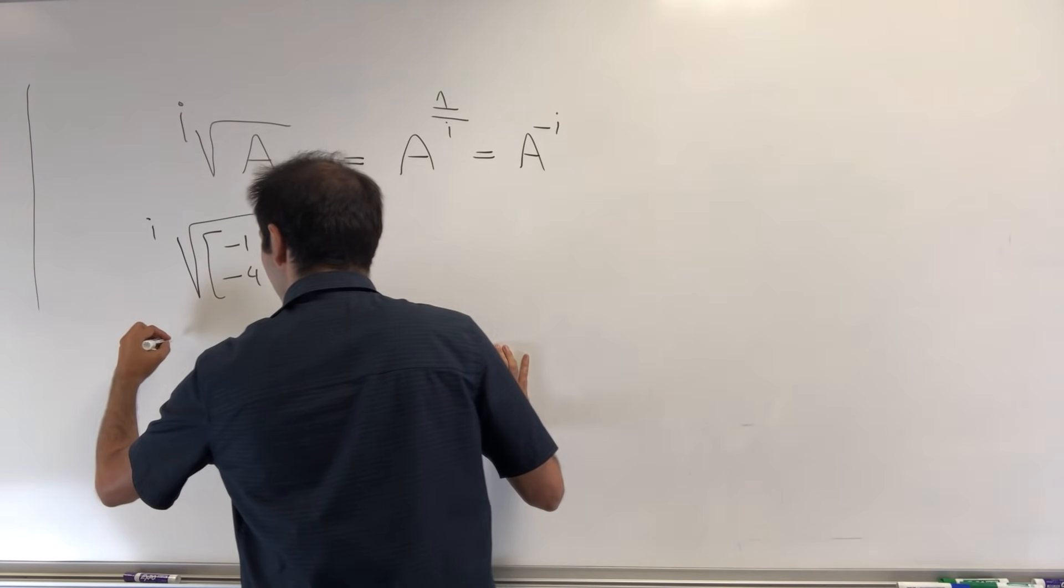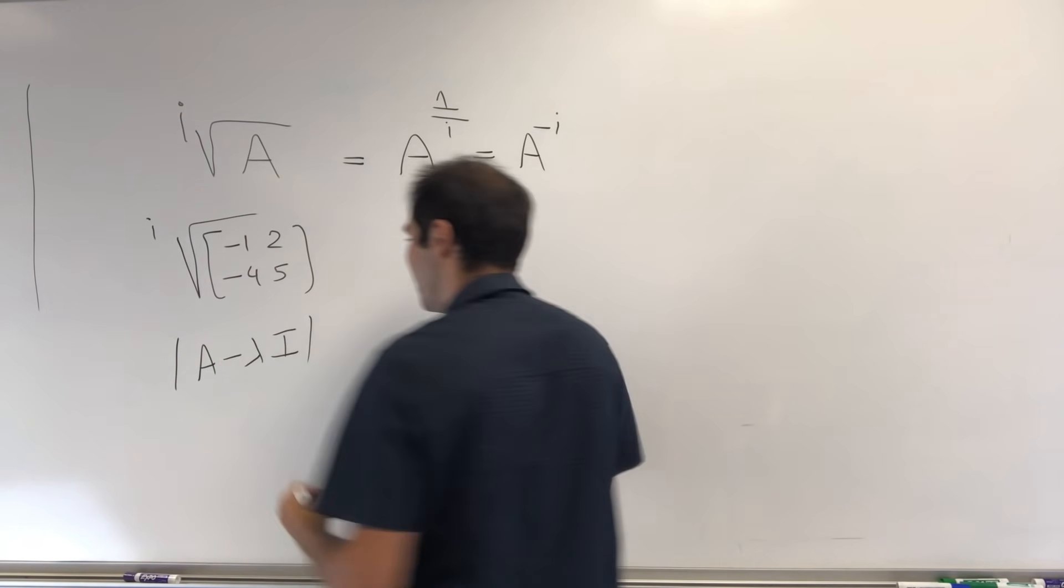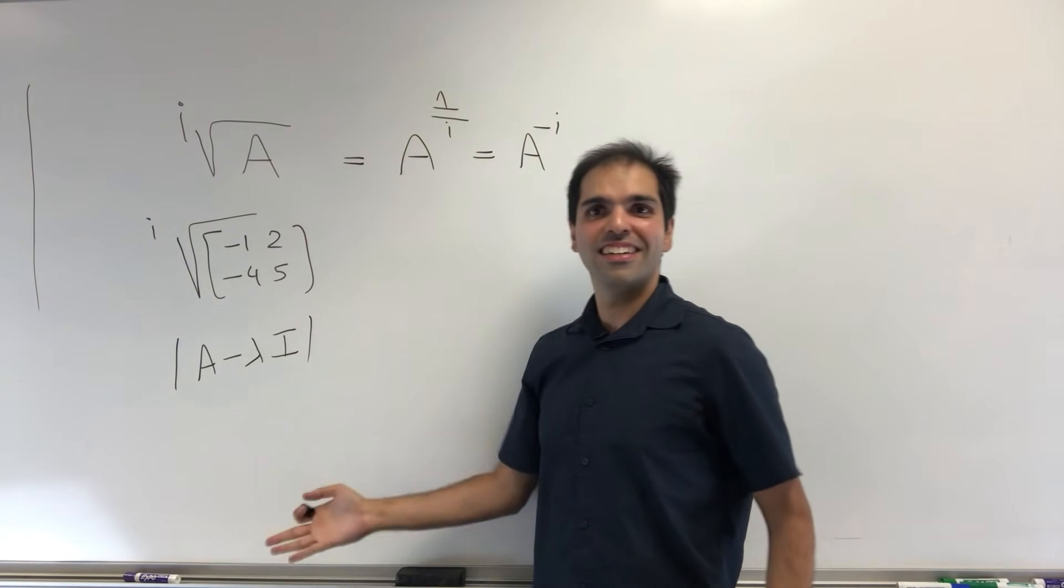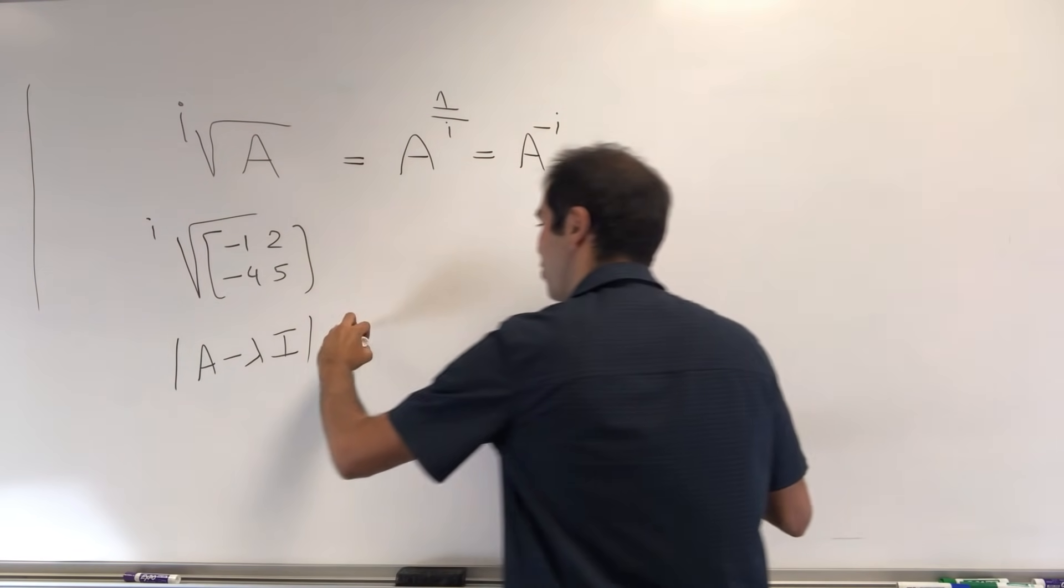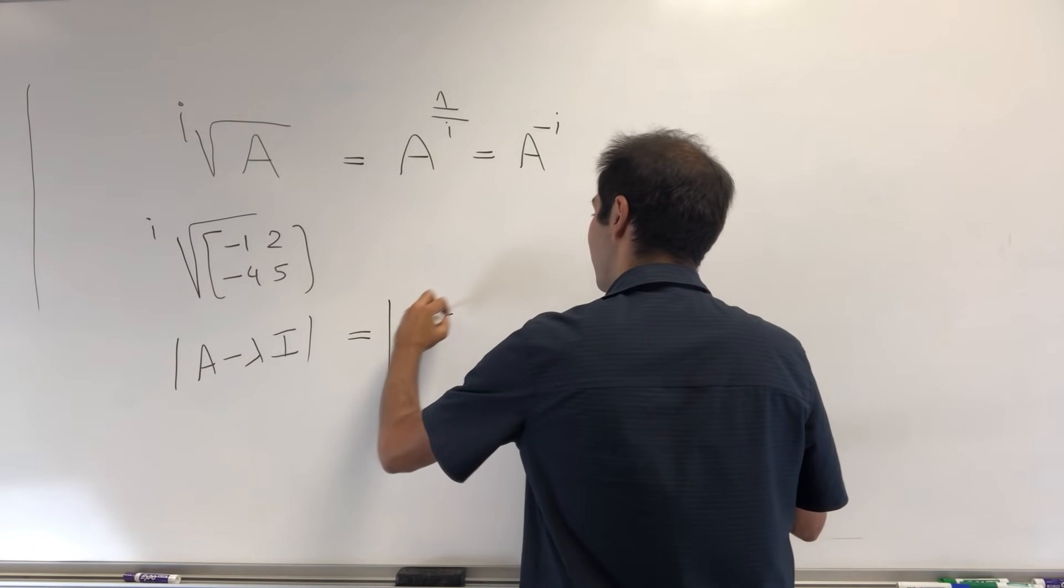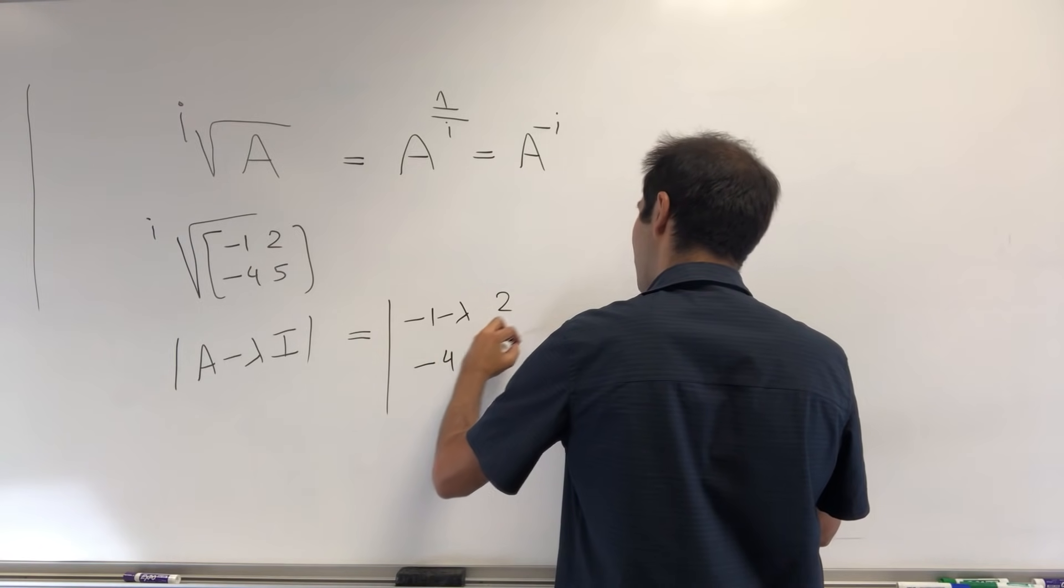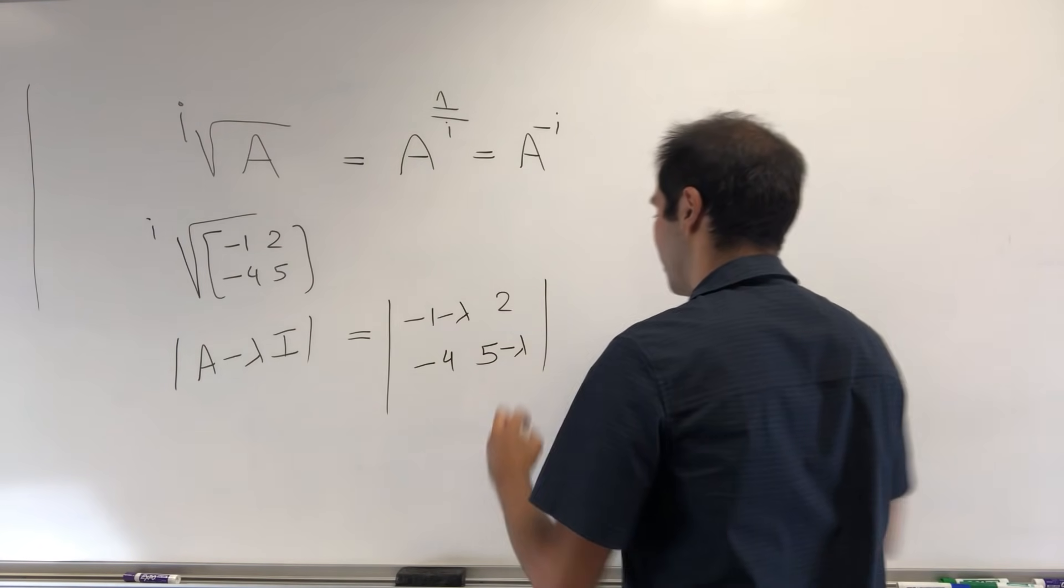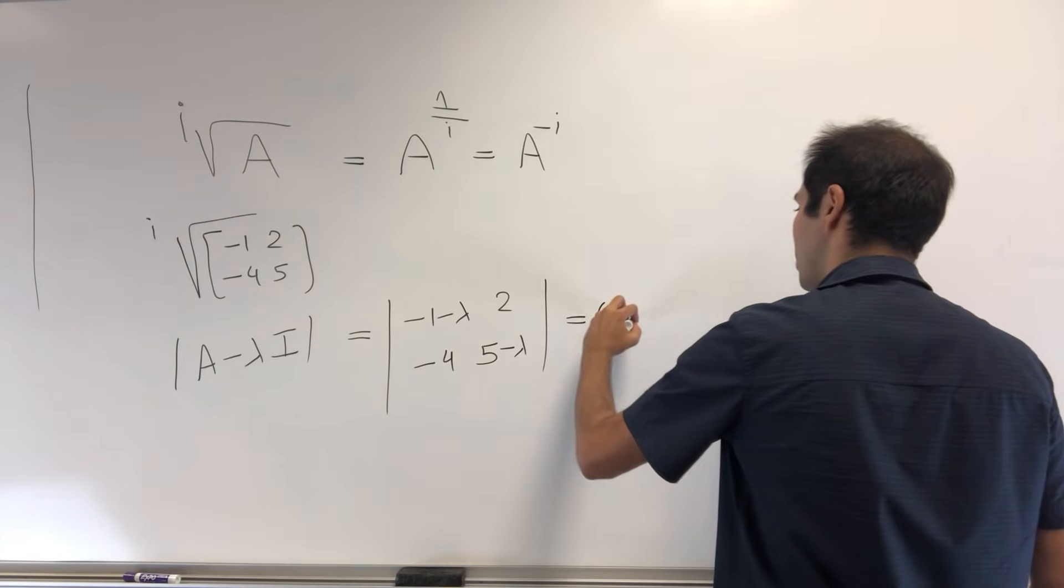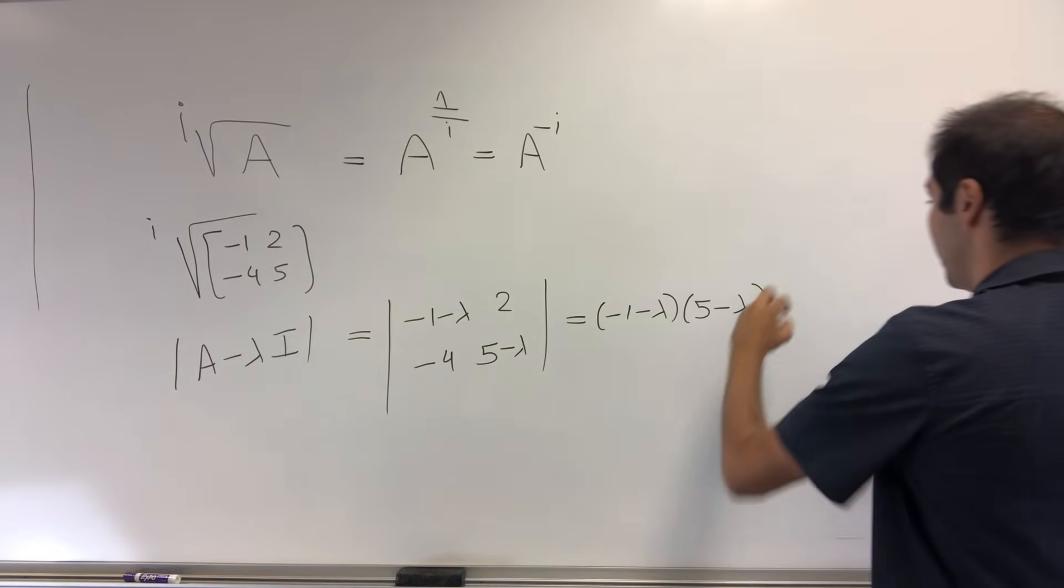And for this, all you do is calculate the determinant of A minus λI. And then what we get is determinant of [-1 - λ, 2; -4, 5 - λ], and that becomes (-1 - λ)(5 - λ) plus 8.